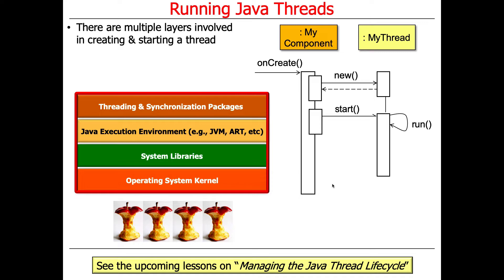There are actually multiple layers involved. The hardware is involved, the operating system kernel is involved, various C system libraries are involved, the Java execution environment, the Java virtual machine, the Android runtime, and so on. And then finally there are threading and synchronization packages that are also involved. I'll walk through a little trace later in the course showing about 15 methods that get invoked one way or another when you call start on a thread.